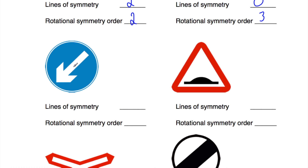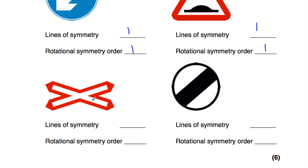The keep left sign has 1 line of symmetry and rotational symmetry order 1. The humps in the road sign has 1 line of symmetry (vertical) and rotational symmetry order 1. The level crossing sign has 2 lines of symmetry (vertical and horizontal) and rotational symmetry order 2. The national speed limit sign has 2 lines of symmetry (both diagonal) and rotational symmetry order 2.